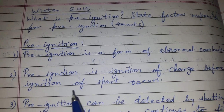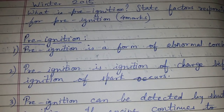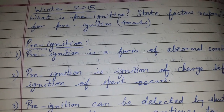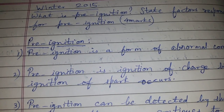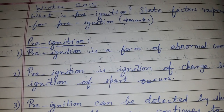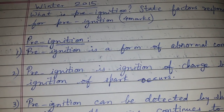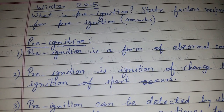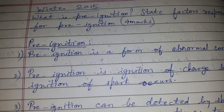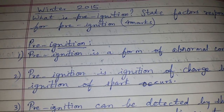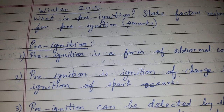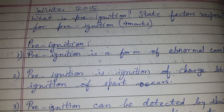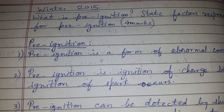In an SI engine, combustion is initiated by production of the spark. Considering ignition delay and propagation of flame, the spark is produced earlier, and when the piston reaches top dead center (TDC), the maximum pressure rise is achieved at the end of the compression stroke. If combustion starts due to any reason before production of the spark, it is known as pre-ignition.